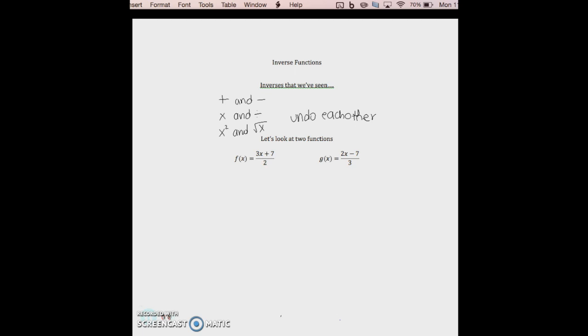So we have f of x equals 3x plus 7 divided by 2, and g of x equals 2x minus 7 divided by 3.